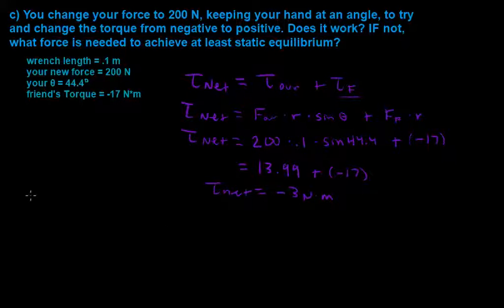When you're in static equilibrium, all of your forces and all of your torques are just going to equal zero. Nothing is going to be moving. So you want to find the force that you need to apply to counteract your friend's force and keep this wrench from moving at all.